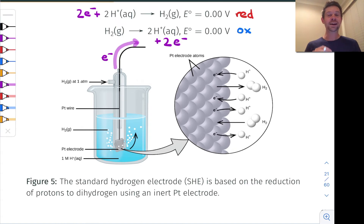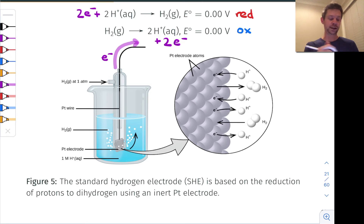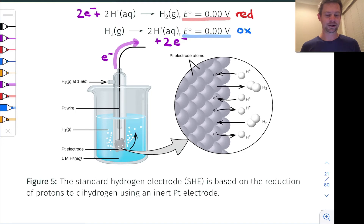What we can do is connect this up with any old half cell, measure the potential of the resulting galvanic cell, and this gives us a measure of the potential of our half cell of interest with respect to the SHE, which we define as having a potential of zero, regardless of whether reduction or oxidation is happening physically inside this cell.